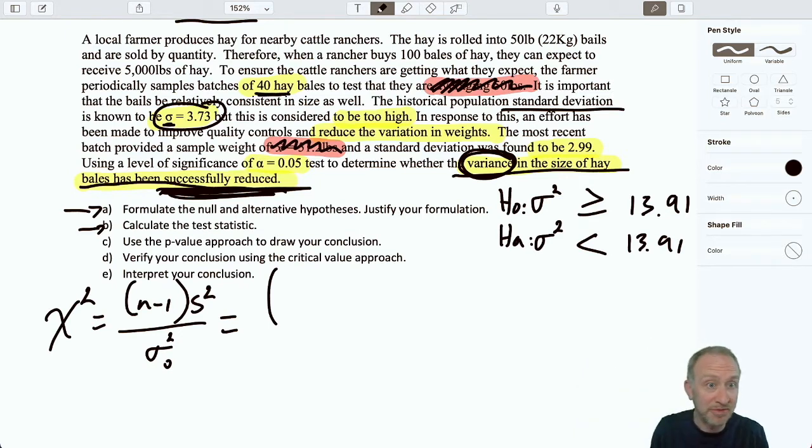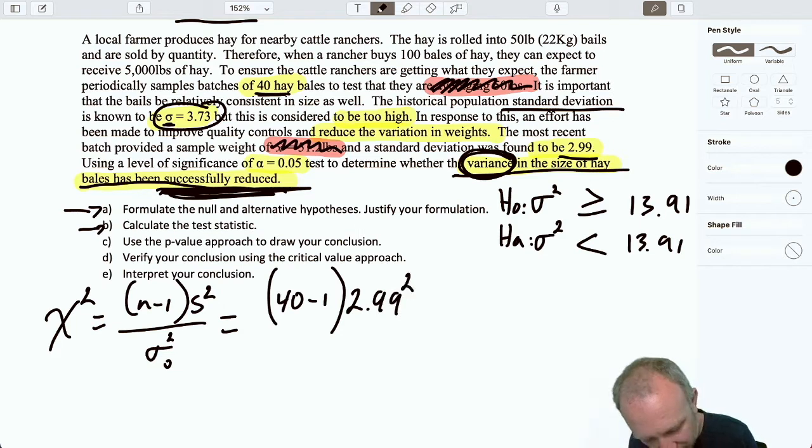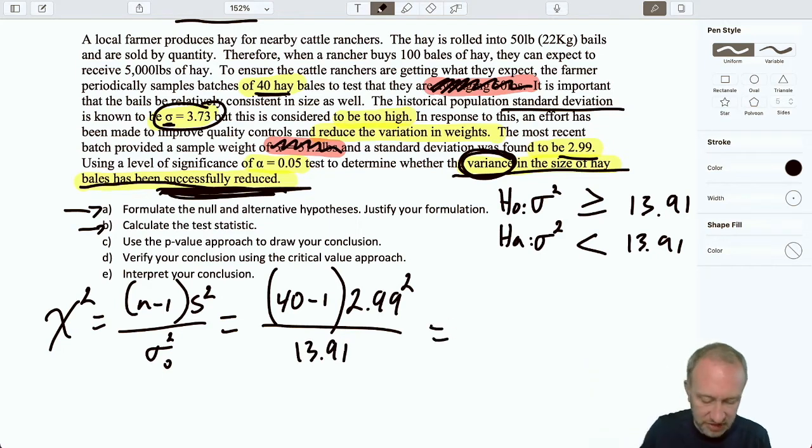And now I can put in my sample values. My sample size is 40 minus 1. My sample standard deviation here, 2.99 squared, and my hypothesized value, 13.91. I reach for my calculator. I have 39 times 2.99 squared divided by 13.91, and that gives me a chi-squared value of 25.07.